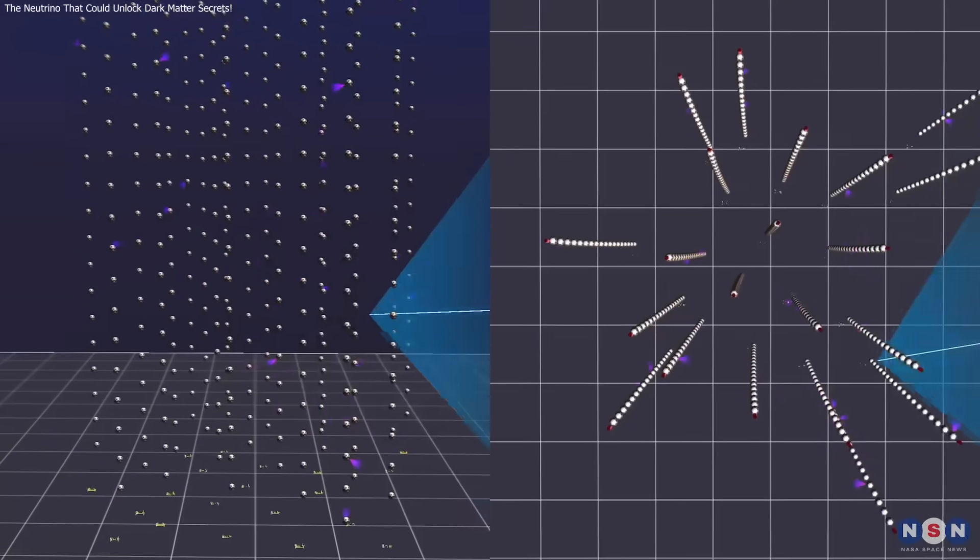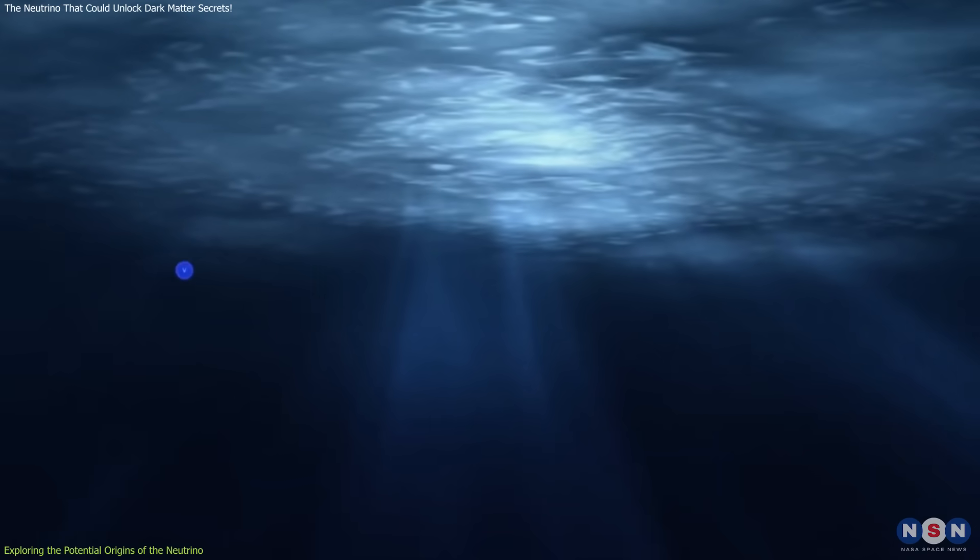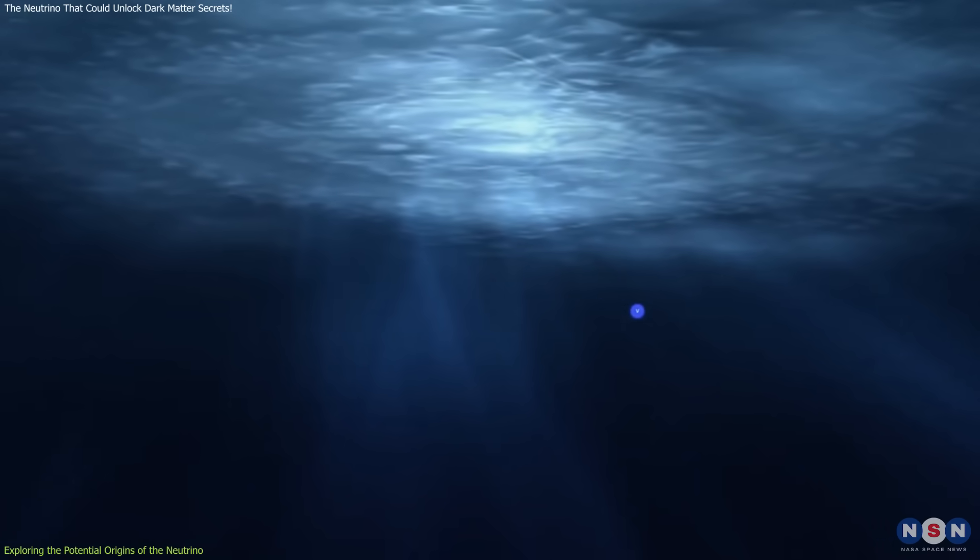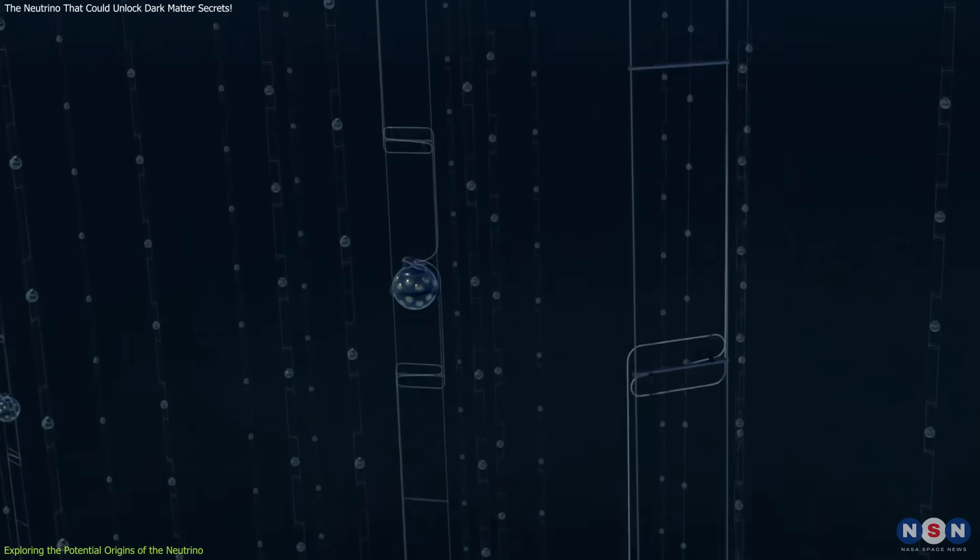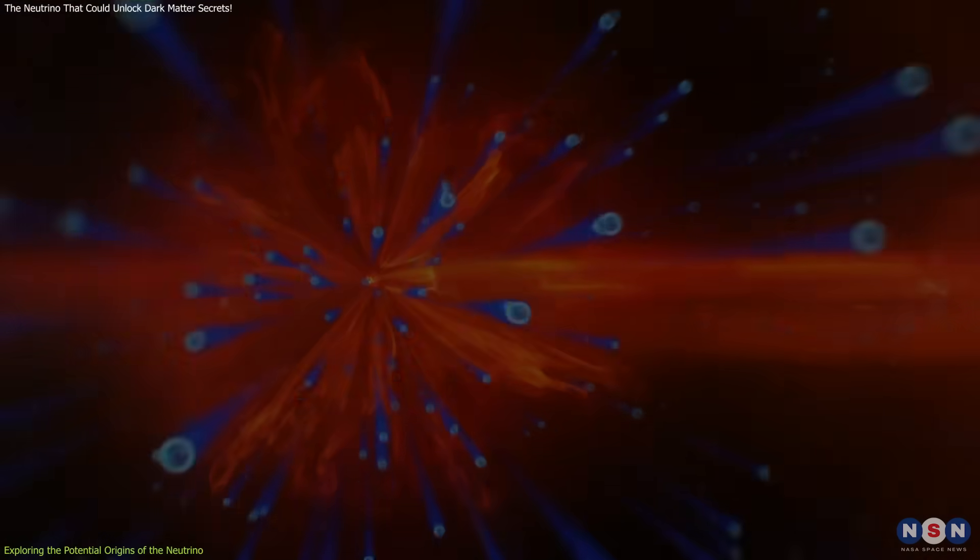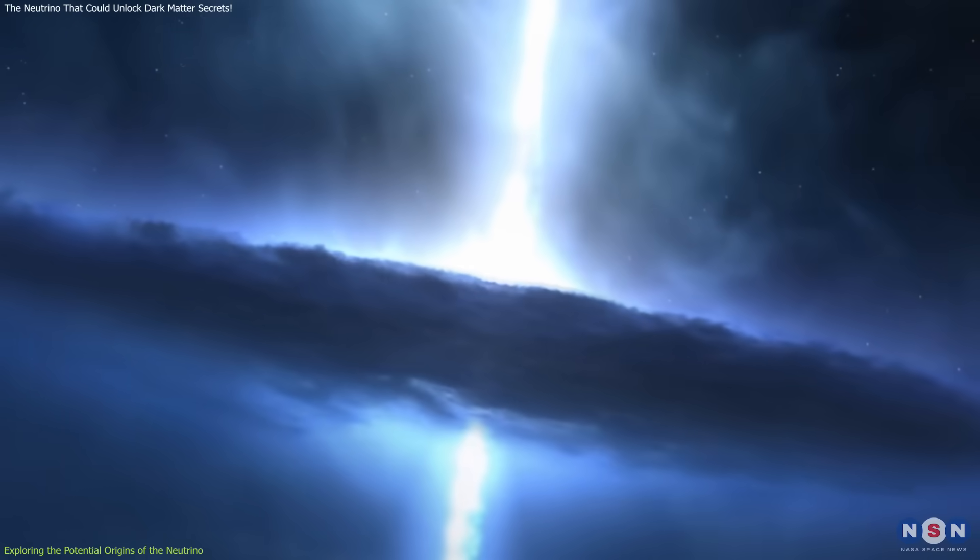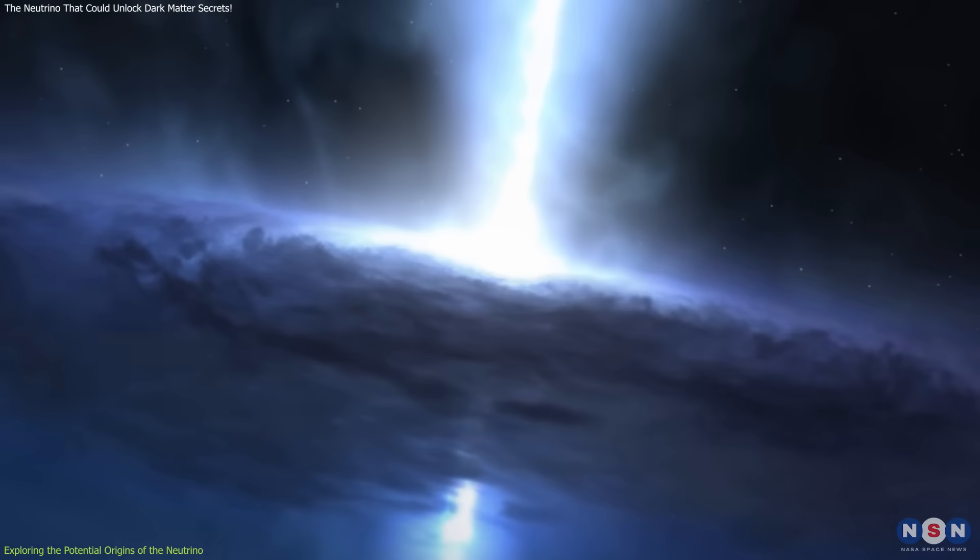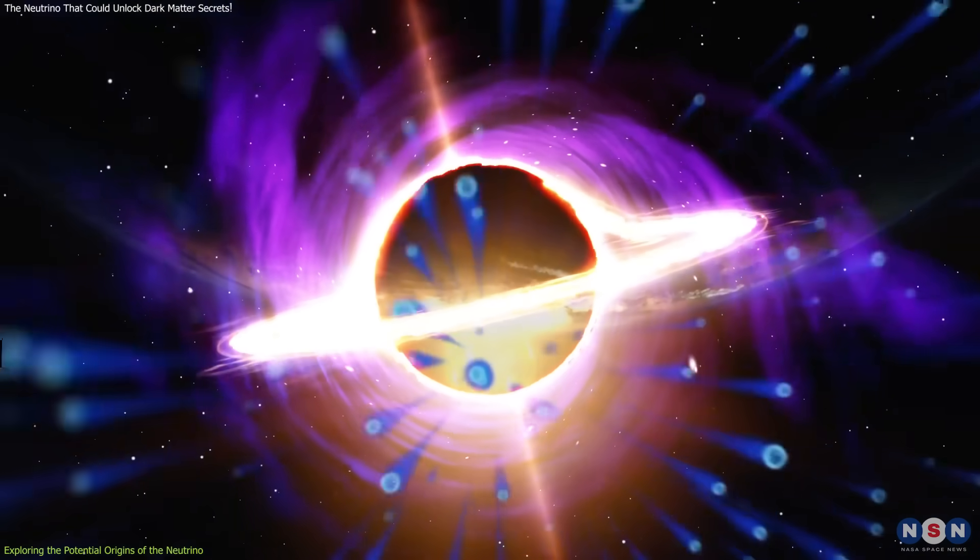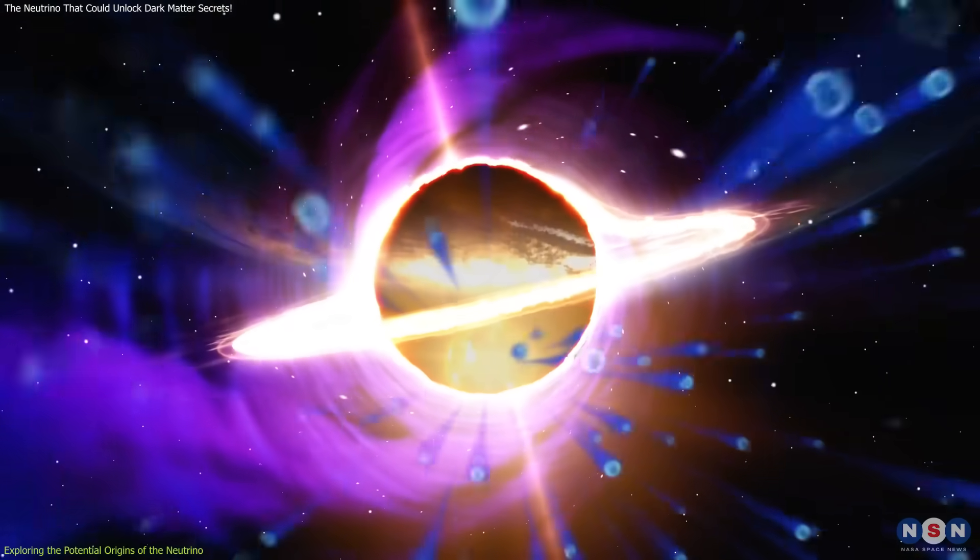With KM3-230213A's incredible energy in mind, the next question is, where did this neutrino come from? The majority of high-energy neutrinos detected by observatories like KM3-NET are typically attributed to extreme astrophysical sources such as blazars, supermassive black holes at the centers of galaxies that emit powerful jets of particles. These jets can accelerate particles to extremely high energies, potentially producing neutrinos in the process.